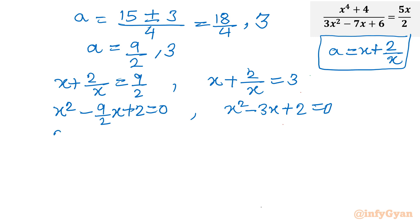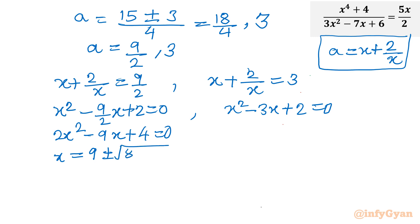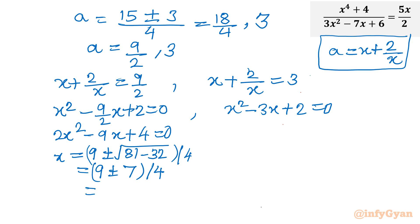Multiply the first equation by 2 to clear the fraction: 2x square minus 9x plus 4 equal to 0. Applying the quadratic formula: x equals 9 plus or minus under the root of 81 minus 4 times 2 times 4, which is 32, divided by 4. That gives 9 plus or minus square root of 49, which is 7, over 4.